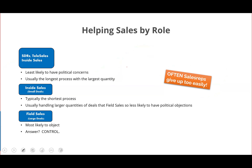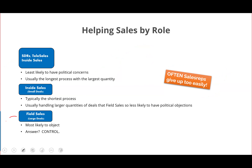As we get further down the process by role, inside sales — if you have it for small deals — is typically a pretty short process with larger quantities of deals. They're sort of in the middle ground between the two groups. Sales reps handling large, complex deals — field sales — are definitely most likely to object. Executives with experience as field sales reps will often have objections of the same type because they don't want marketing hurting or ruining their deal.